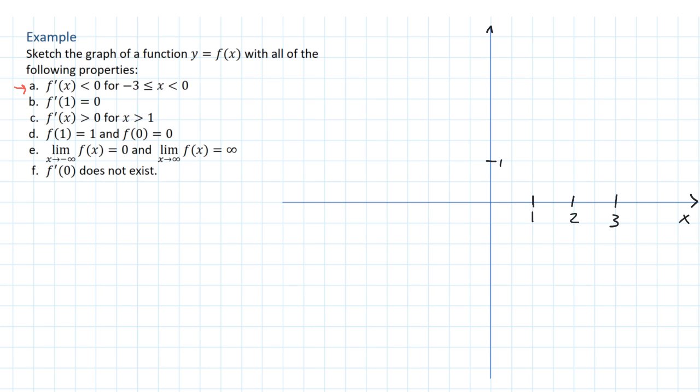There's 1, 2, and 3. There's -1 on the x-axis, -2, -3. Here's -1, -2, and -3 on the y-axis.